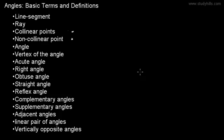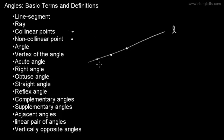Collinear and non-collinear points: if we have one line L and there are three or more points on this line, they are called collinear points. Here A, B, and C are collinear points. But if there are points which are not on the line, like point D and point E, then we say points D, E, and C are not collinear.